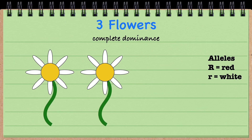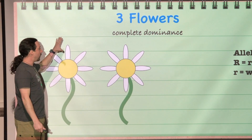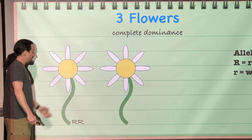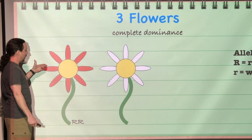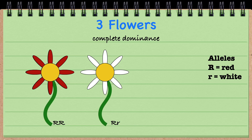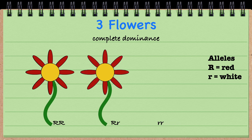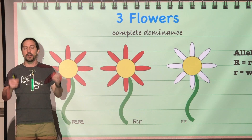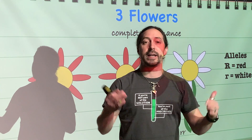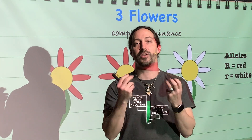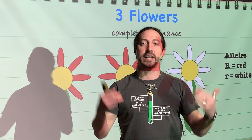What we were looking at before was called complete dominance, where if you happen to have two different alleles and our organism was homozygous dominant it would appear red. If it happened to be heterozygous it would also appear red. And only if it was homozygous recessive would you end up with a white flower. The only way the recessive allele would be expressed is if the organism was homozygous for the recessive trait, and then it would have the recessive phenotype.